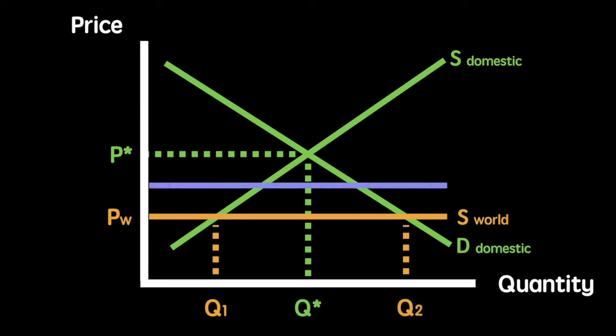Suppose the government now decides to impose a tariff on imports. That will increase the price of imports by the full value of the tariff, resulting in our world supply curve shifting upwards to S world plus tariff. Our new price is PW plus T. Due to the higher market price, domestic supply now extends to Q3 and foreign supply reduces to the difference between Q3 and Q4.